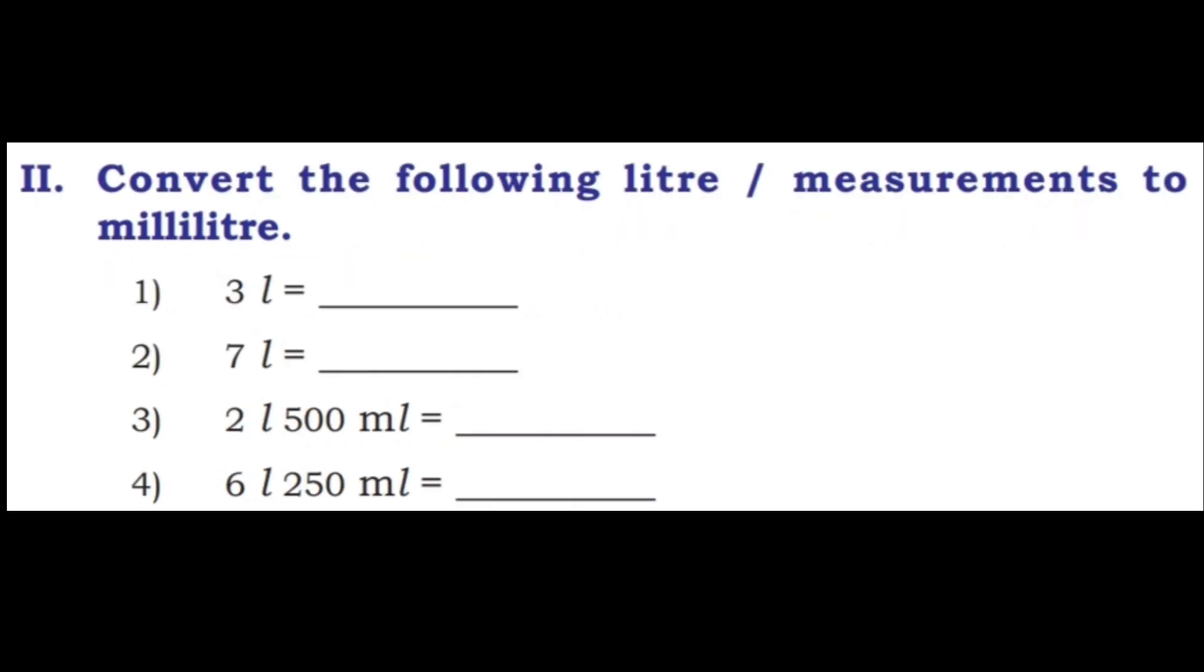2nd main, convert the following liter or measurements to milliliters. 1st one, 3 liter. So 3 into 1000 equals 3000. So answer will be 3000 ml.